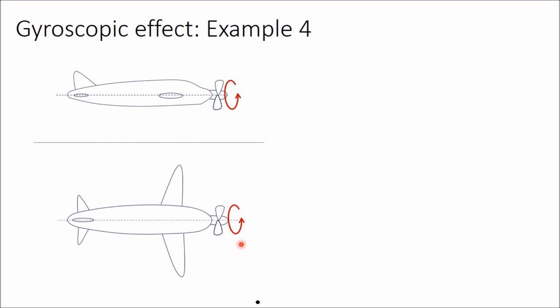If the plane takes a turn — here it is taking a right turn — the axis of rotation of the propeller also turns. This axis is rotating in clockwise direction about the vertical axis when viewed from the top. Therefore, in this case a gyroscopic effect will be generated, and the value of this gyroscopic couple will be I·ω·ωp, as discussed in the previous video.